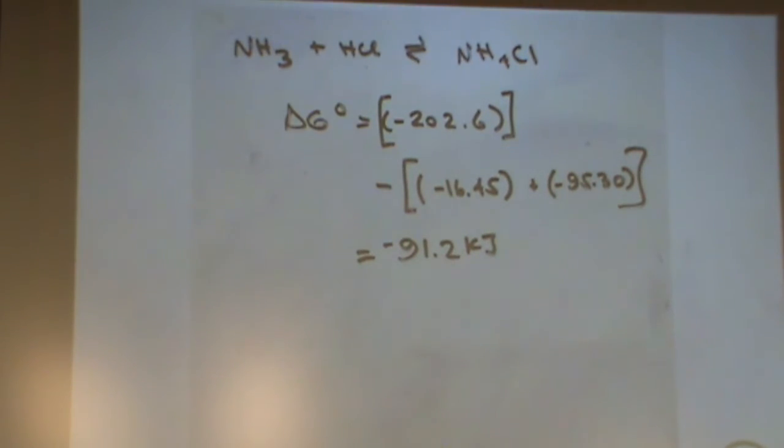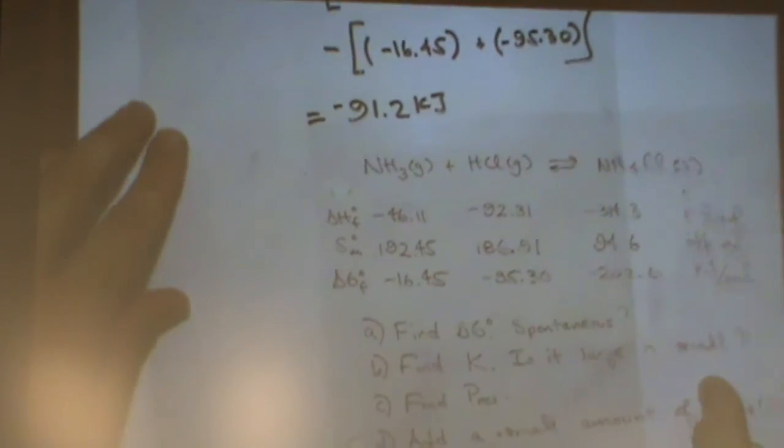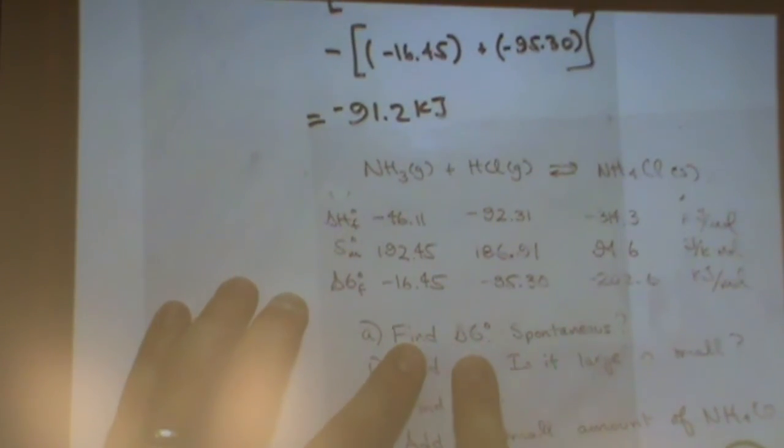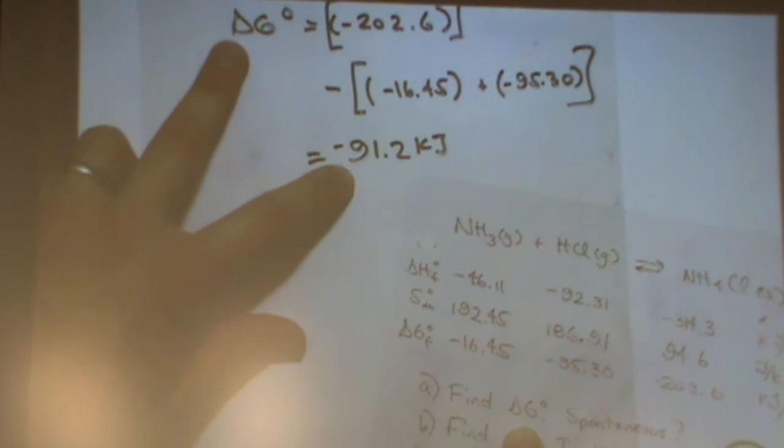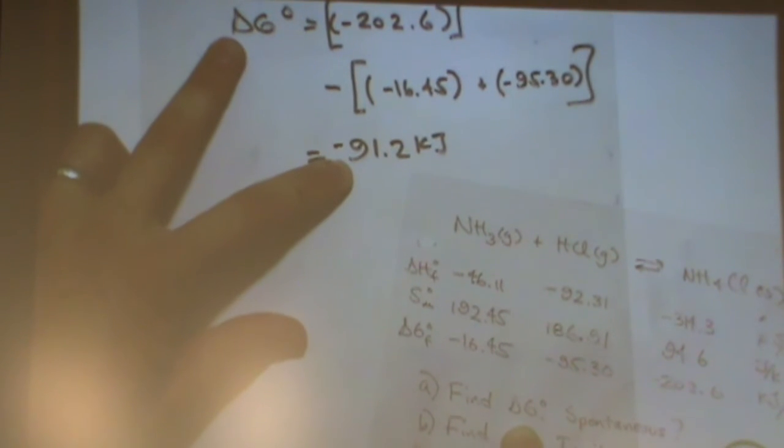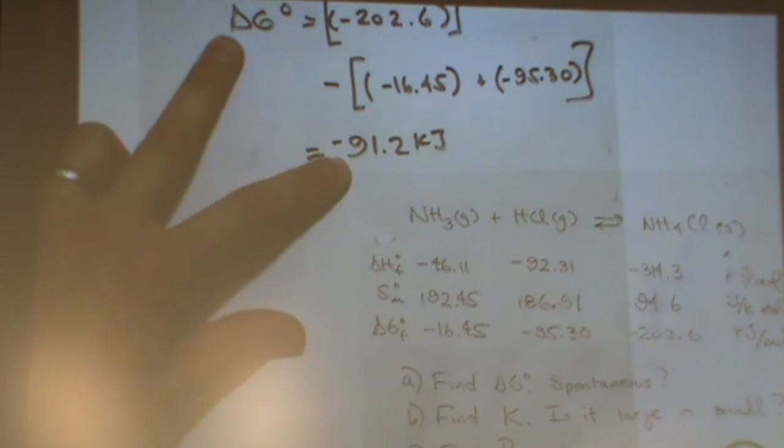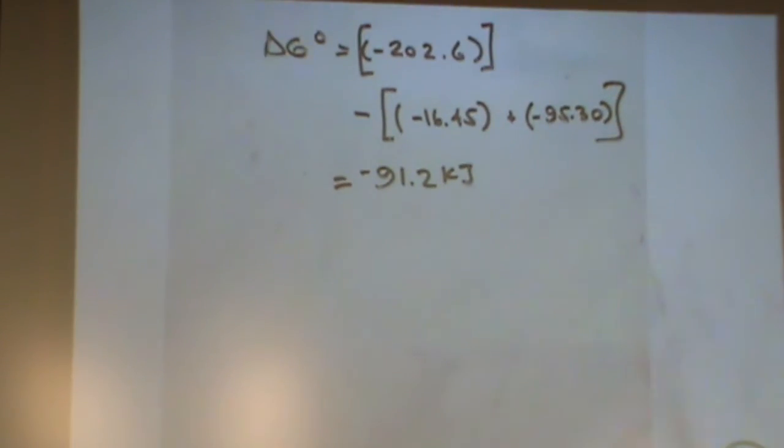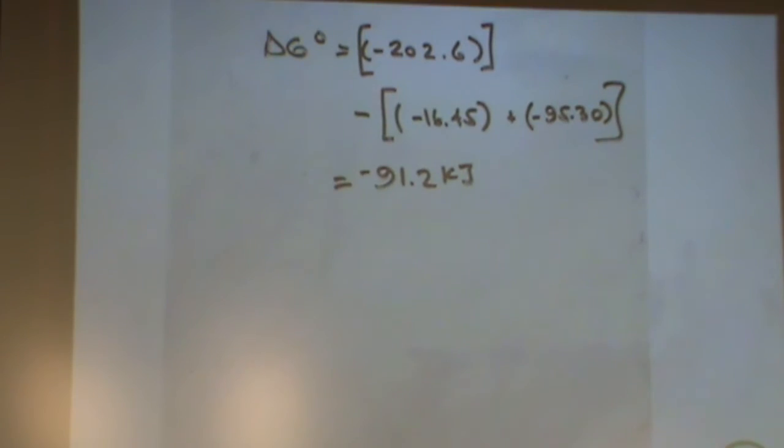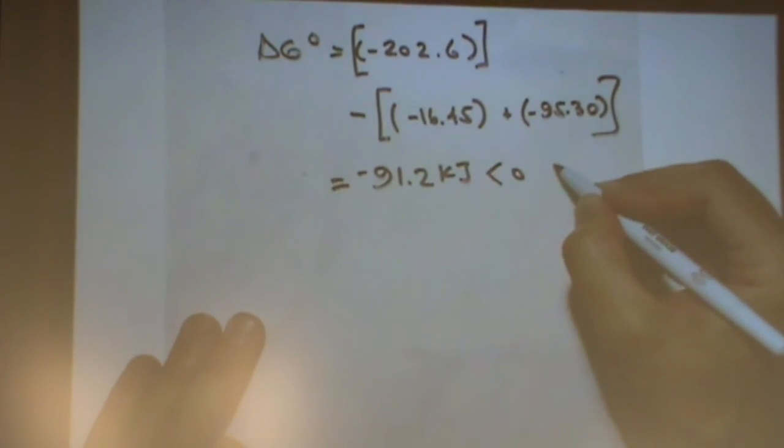And you can kind of decide whether you put kilojoules or kilojoules per mole here. Either as far as I'm concerned, it would be acceptable. All right, so because they only gave us standard conditions, now I have to use delta G, and that's the only thing I have to determine spontaneity. So I have to determine spontaneity only at standard conditions. Spontaneous or not? Yes, it is, because it's less than zero, so it's spontaneous.